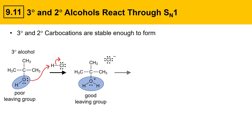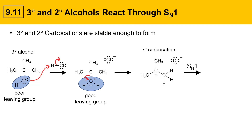Since this is a tertiary substrate, it can form a stable carbocation — a tertiary carbocation. That tertiary carbocation can undergo an SN1 substitution mechanism, where the chlorine now attacks the carbocation carbon, and that gives an alkyl chloride, which is the product of the reaction we're looking for.